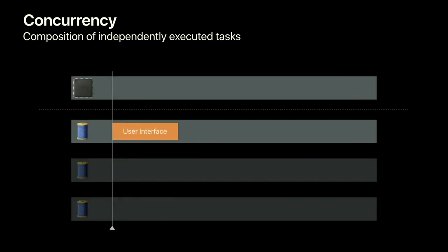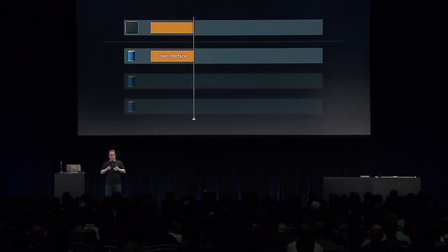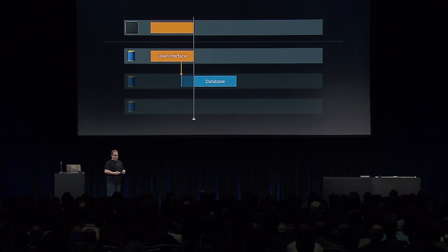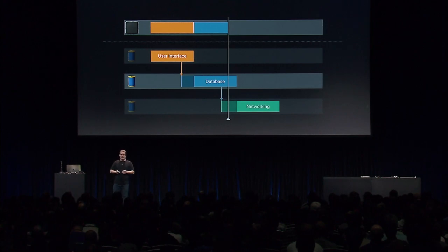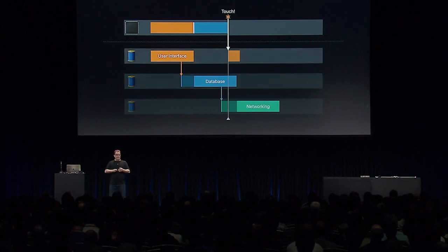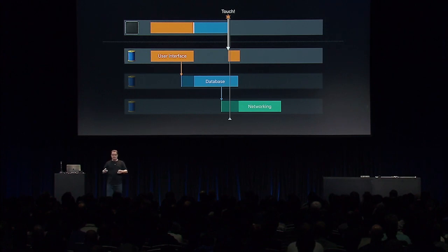Let's visualize how this executes concurrently on a modern system with one CPU available. Only one thread can run on that CPU at a time. When a user clicks a button and refreshes the article list, the user interface responds to that button and sends an asynchronous request to the database. The database decides it needs to refresh the articles and issues a command to the networking subsystem. When the user touches the app again, because the database work is off the main thread, the OS can immediately switch the CPU to the UI thread and respond immediately to the user.